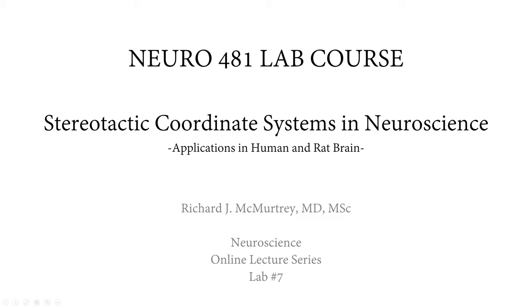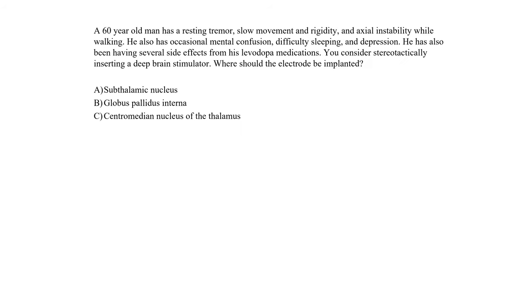I'll start with a clinical application question. A 60-year-old man has a resting tremor, slow movement, rigidity, axial instability while walking, and he also has occasional mental confusion, difficulty sleeping, and depression. You can imagine just from these symptoms — this constellation — as being Parkinson's disease.